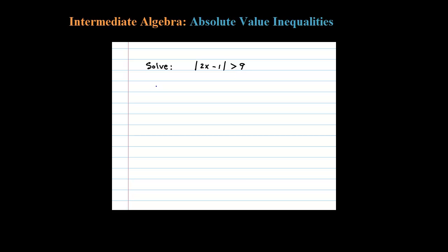So in other words, the argument 2x minus 1 has to be less than negative 9. For example, like negative 10 - if this was negative 10, in absolute value certainly that would be greater than 9.